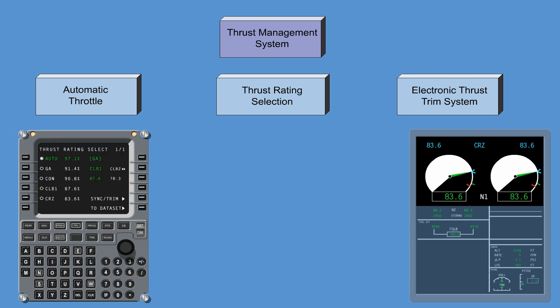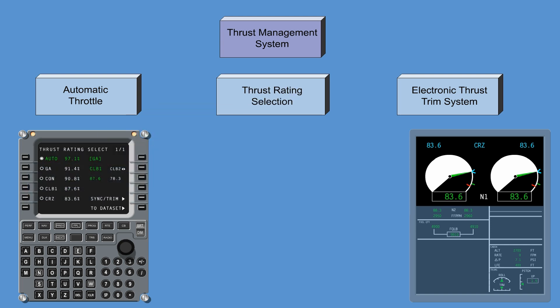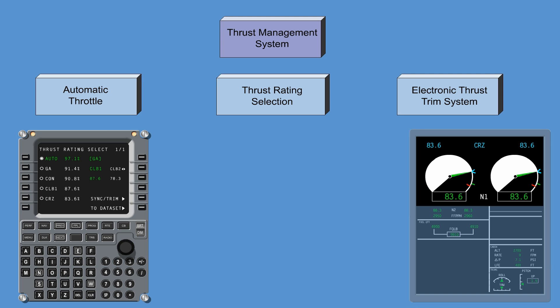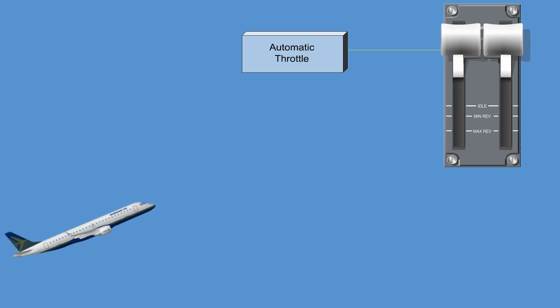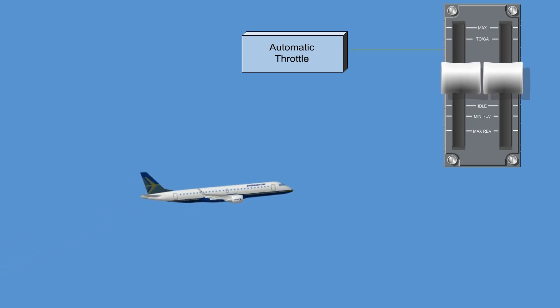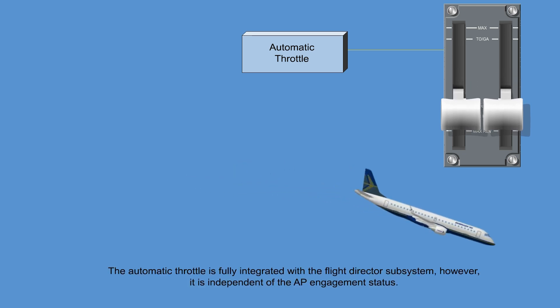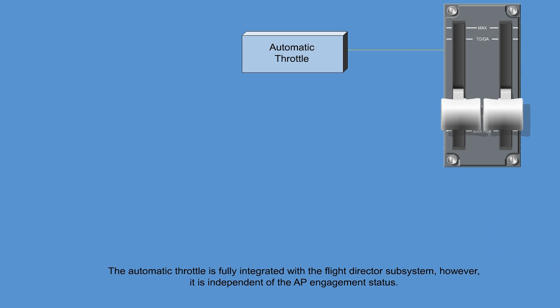The thrust rating selection computes the active engine rating for the current phase of flight and for display on the ICUS. The thrust rating selection operates independently of the automatic throttle. The automatic throttle system automatically positions the throttle levers to control the airplane's thrust throughout the flight regime. The automatic throttle is fully integrated with the flight director subsystem but is independent of the autopilot engagement status.